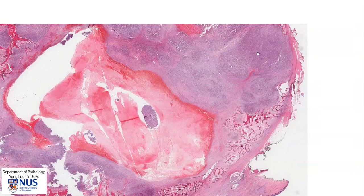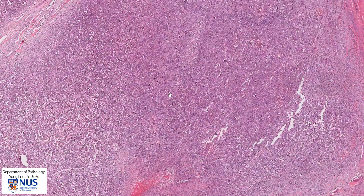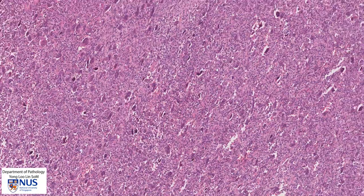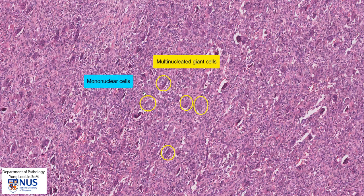Let's take a closer look at this tumor. In this region, as I move into slightly higher magnification, we can just about make out that there are these kind of bluish, much larger cells. As I increase the magnification, you can see that there are these larger cells, which are actually multi-nucleated cells. And in between, there are many, many cells that have a single nucleus, otherwise known as mononuclear cells.